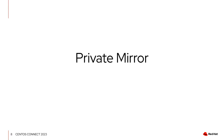Mirror Manager also knows about private mirrors. A private mirror is one behind a firewall where the mirror administrator doesn't want anyone from outside the organization to use it. You can mark your mirror as private, and if you're a university or company with a mirror behind a firewall, your local users will be directed to it, but nobody else. Private mirrors are not checked to see if they're up to date, because the assumption is we probably can't reach them — so it's up to the maintainer to ensure it's current, and Mirror Manager will believe that it is.